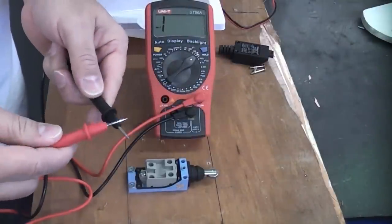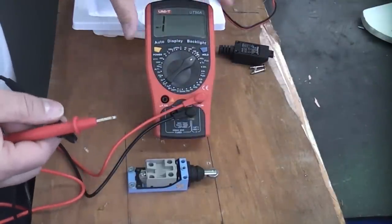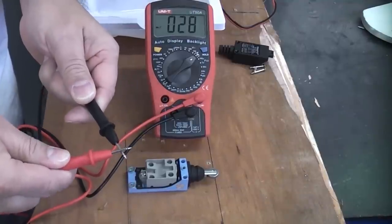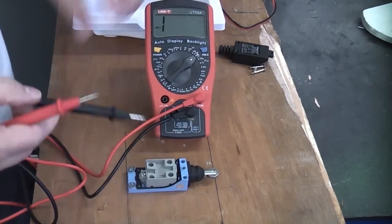I've now set the multimeter to the bleep function so this is now measuring continuity. Once we touch the two probes together and we get continuity, the multimeter bleeps.